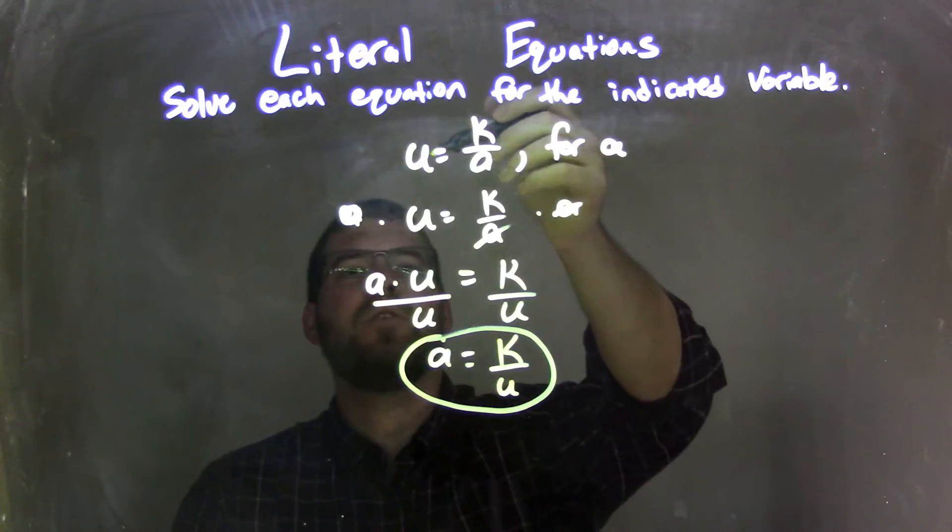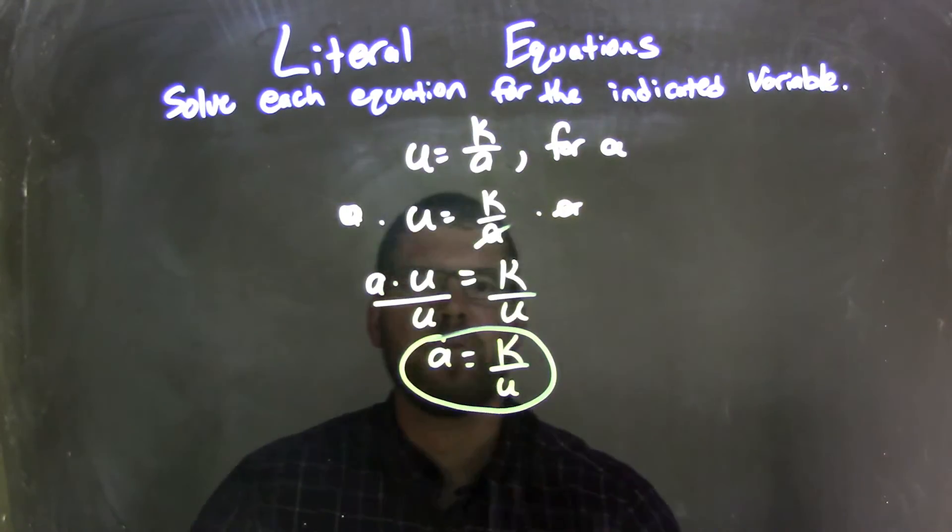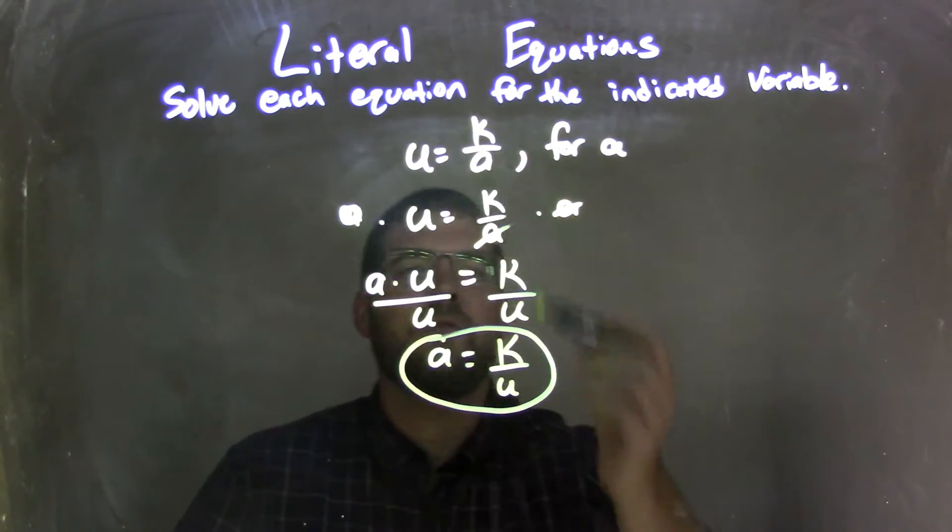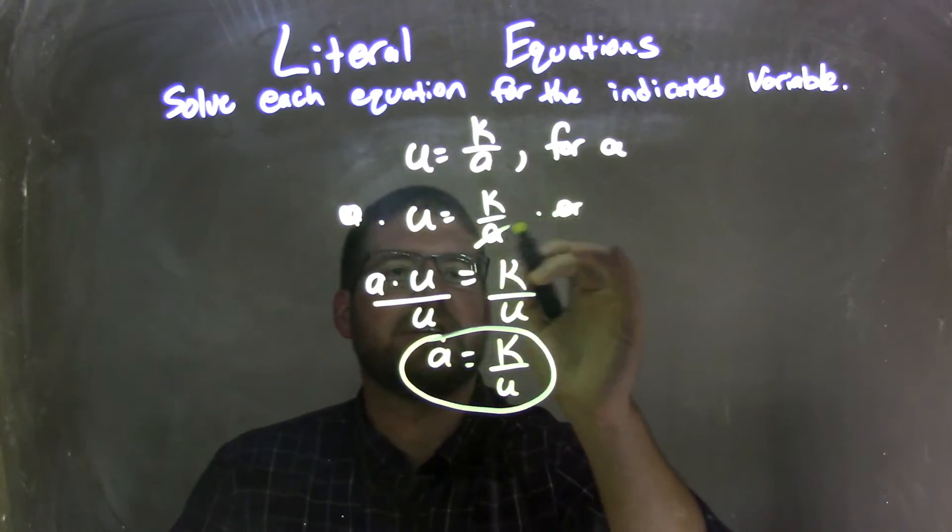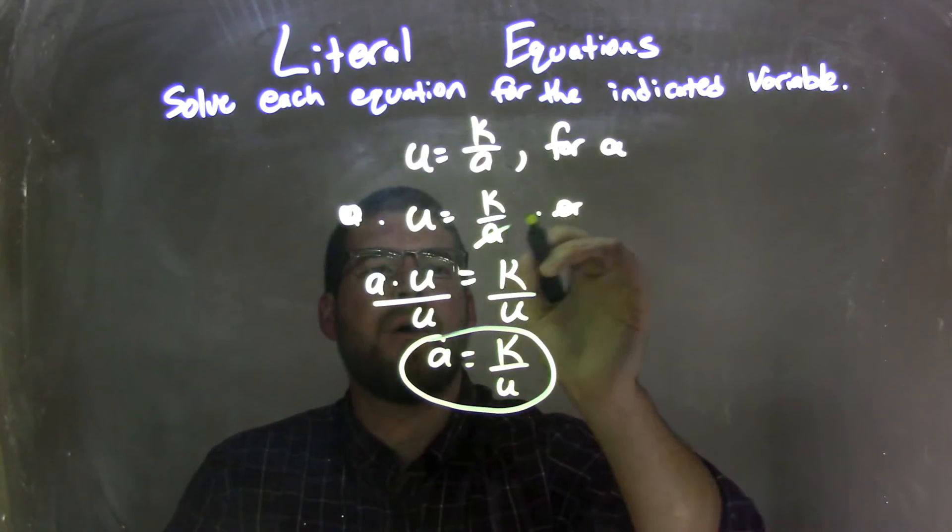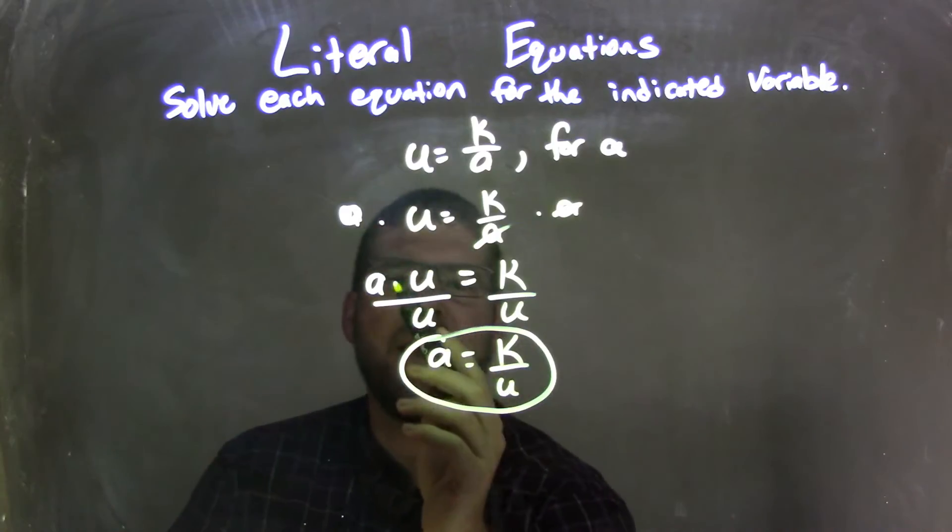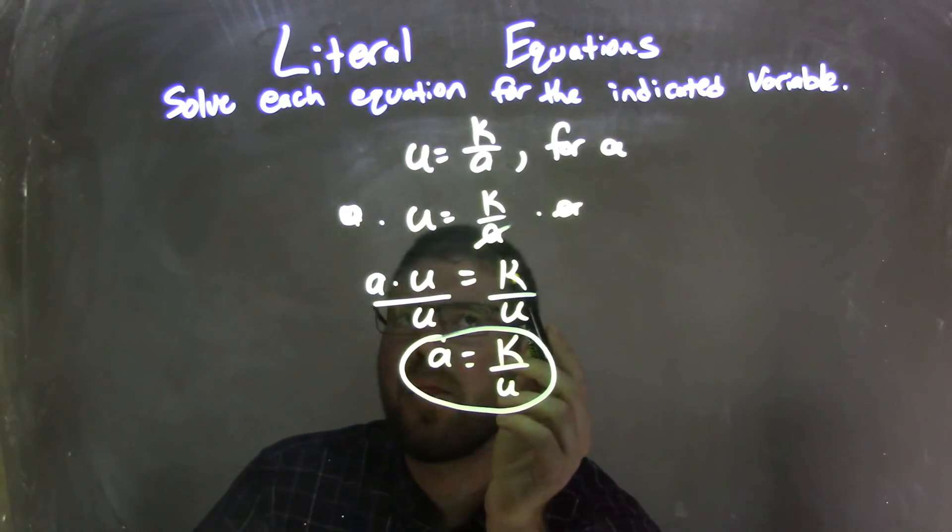So let's recap. We started with u equals k over a, and we're going to solve that for a. So when I rewrote my equation, I decided that I was actually, because I don't like things in the denominator, I brought everything up. So I multiplied both sides by a, leaving me with a times u on the left and a k on the right.